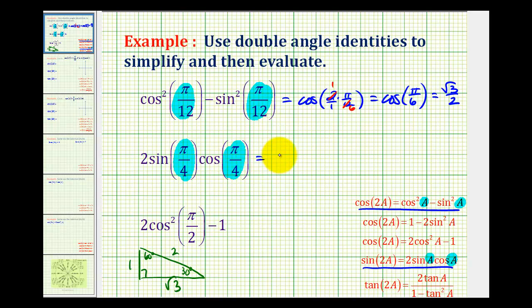So this is equal to sine of two A, or two times pi over four. Now this simplifies nicely. So this equals sine of pi over two, which is equal to one.